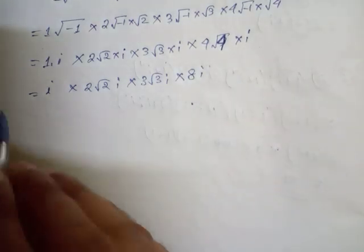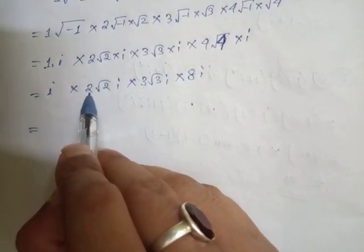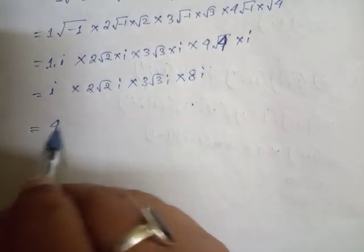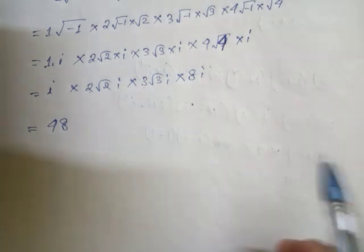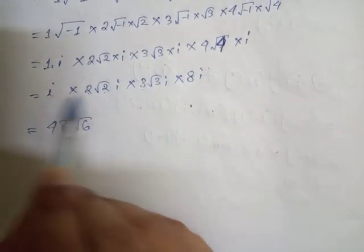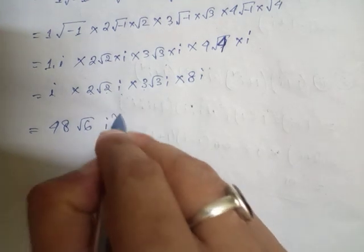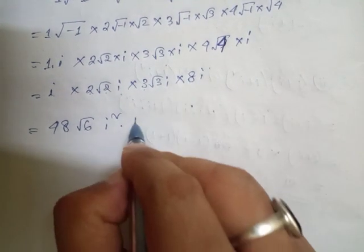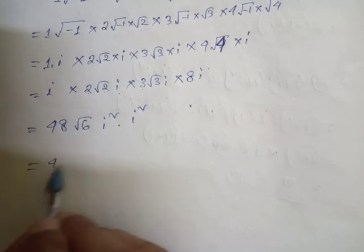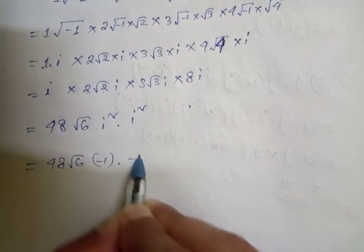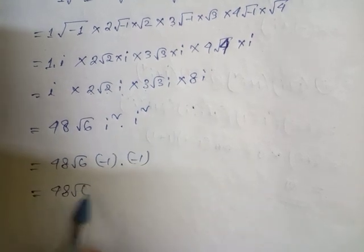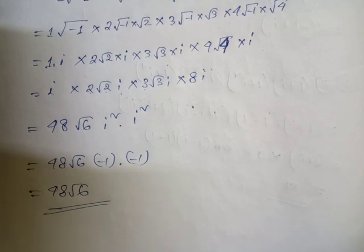Now go for the multiplication: 3 into 6 and 6 into 8 equals 48. And root 3 into root 2 means root 6. Now i into i is i squared, and i into i is i squared. i squared is minus 1, so 48 root over 6 — i squared is minus 1, and again minus 1 — means minus times minus equals plus. The answer is 48 root over 6. This is the answer of Roman 5.